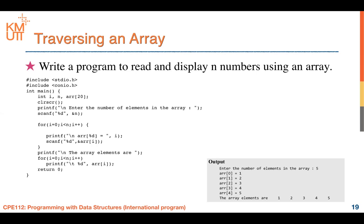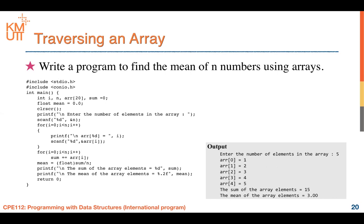After storing the numbers, use a loop to print them out from the array — this is array traversal. Another example is finding the average of n numbers using an array: input all numbers into the array, sum them in a loop, then compute the mean as (float)sum divided by n, and print the result.